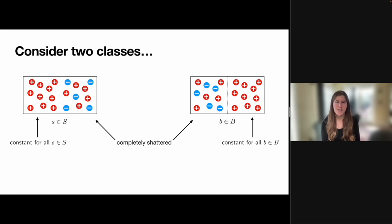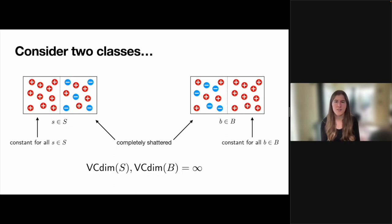This is because the source and benchmark classes can interact in unexpected ways to result in outcomes that could not be predicted by their individual VC dimensions alone. In this example, suppose I have two hypothesis classes S and B, and a domain that has been partitioned into two halves. On one half of the domain, all the hypotheses in S are always just constant, while B shatters that half and realizes all possible labelings. On the other half, this behavior is switched: S shatters the domain, while all hypotheses in B are constant. Assuming our domain has infinite size, the VC dimensions of both S and B are infinite because they each shatter half of the domain, meaning both require many samples in the agnostic and realizable settings.